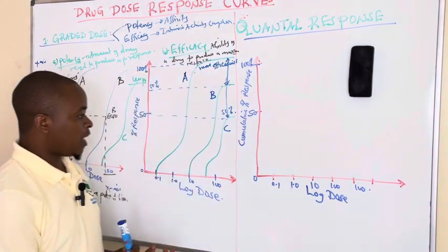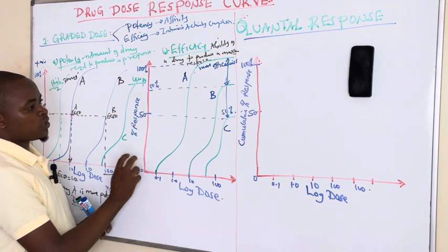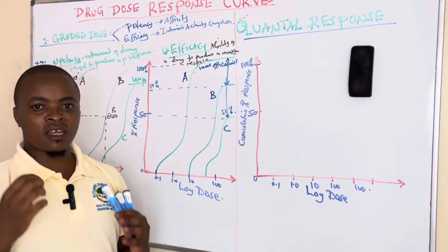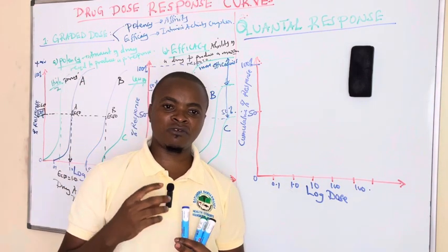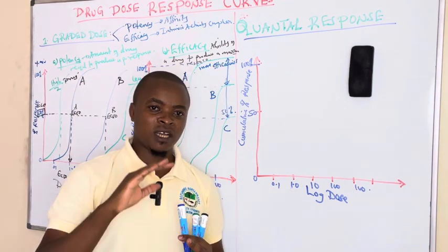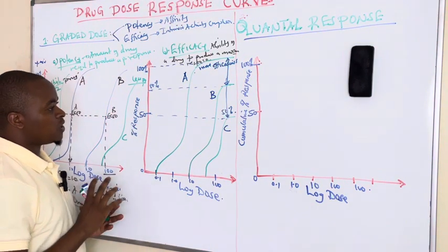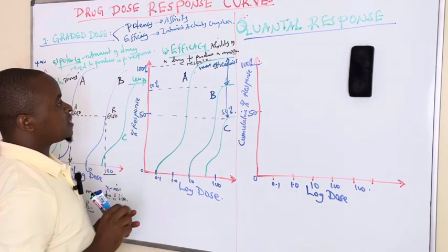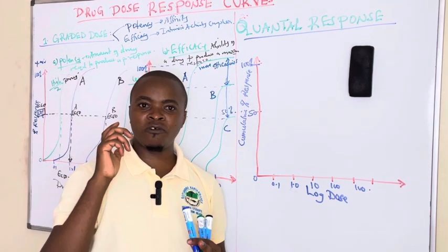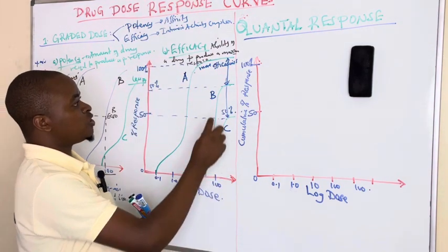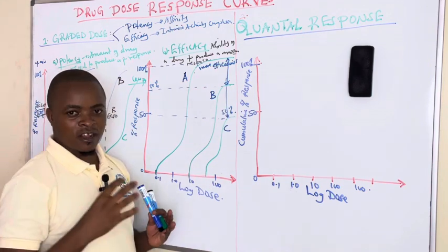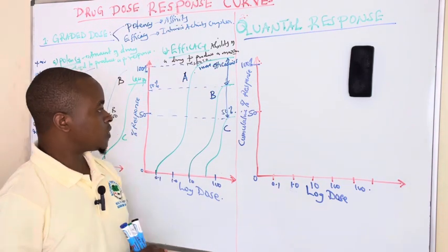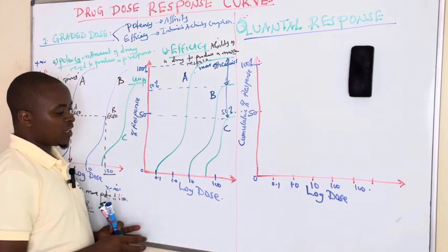This is how we use the graded dose-response curve to determine which drug is more efficacious — efficacy being the ability of the drug to bind to its receptor and produce a pharmacological response. Drugs that produce 100% pharmacological response are called full agonists, while those producing less than 100% are called partial agonists.